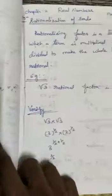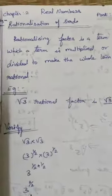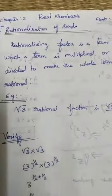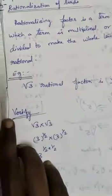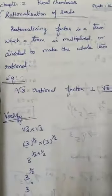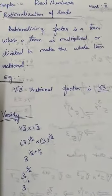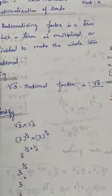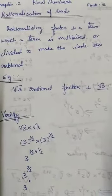Today we study about rationalization of surds. What is rationalization of surds? A rational number to make it as a rational number, that is called as rationalization of surds. Rationalization factor is a term which is multiplied or divided.